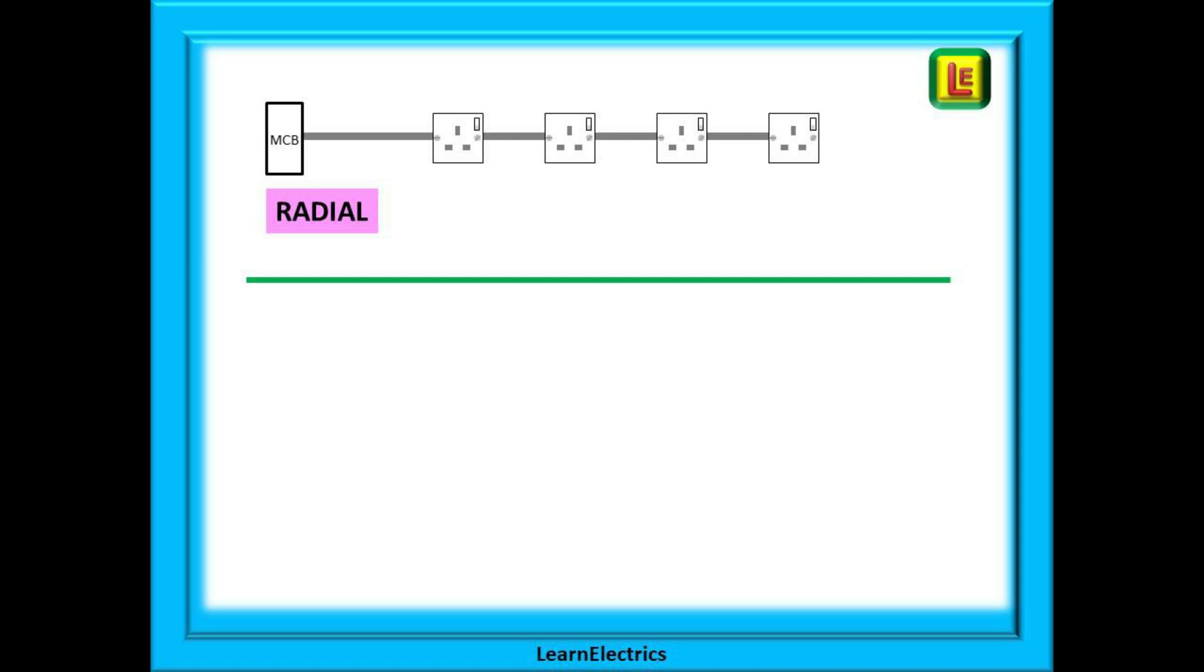Shown here is a radial socket circuit. A cable leaves the circuit breaker, the MCB, and visits each socket in the circuit one after the other. When it gets to the last socket the cable stops. There is only one route for electricity to flow along.